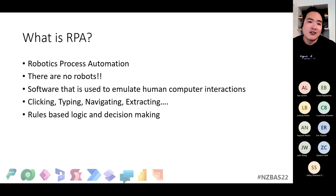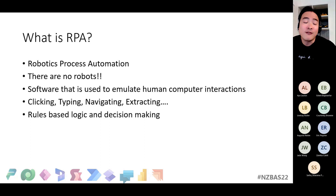RPA hasn't really gained momentum until roughly the past five or six years, when it got featured on the Gartner Hype Curve. RPA is now so popular that Gartner predicts that by 2022 — the end of this year — organization spending is going to exceed $3 billion. So it's quite significant.